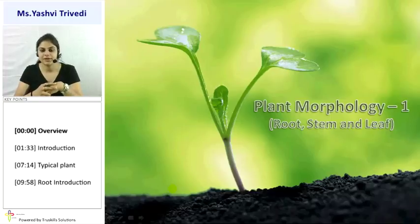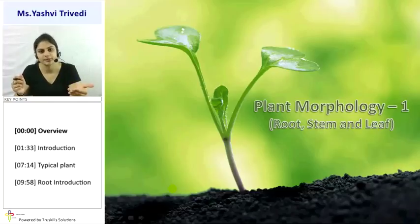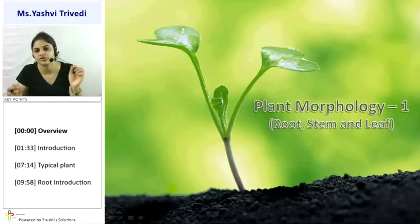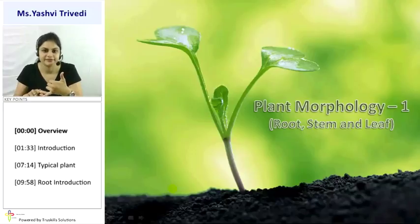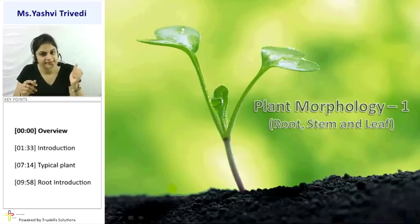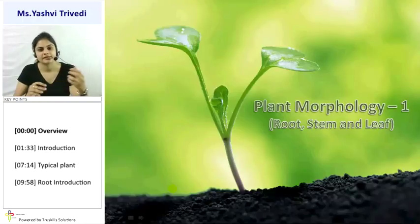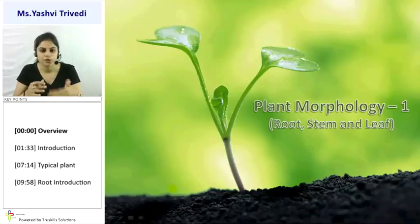We are going to start with Plant Morphology 1. Morphology means the study of external structures of the plant — the one which you can easily see. In Chapter 1, we are going to study the vegetative parts of the plant: root, stem, and leaf. We will study their structure, characteristics, normal function, specialized function, modification, and different architectural functions of each part.